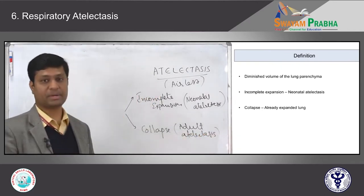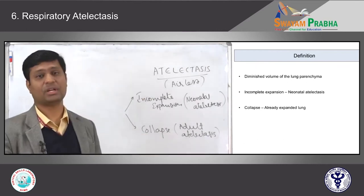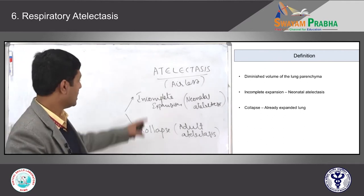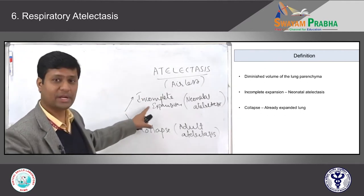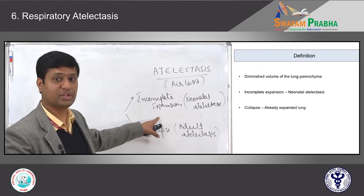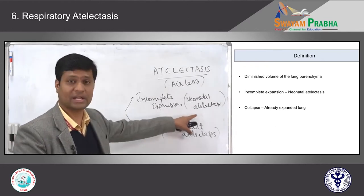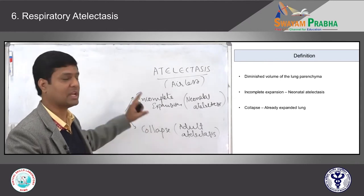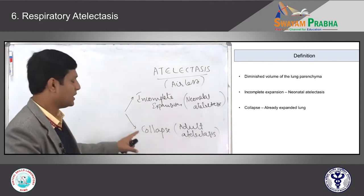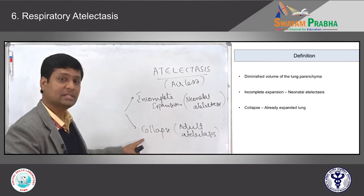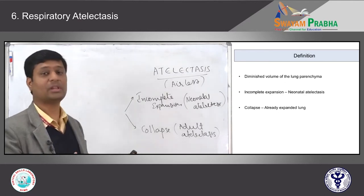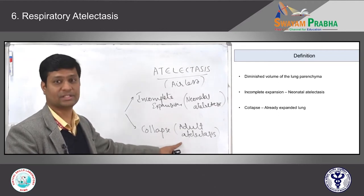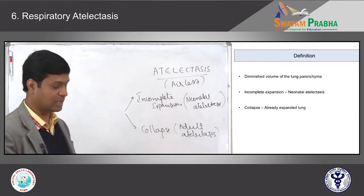To repeat: atelectasis by definition is diminished volume in the lung parenchyma. Whether it is due to incomplete expansion when the baby is born — called neonatal atelectasis — or if atelectasis occurs in adults where the lung is already expanded, then we call it adult atelectasis. Both distinctions should be very clear.